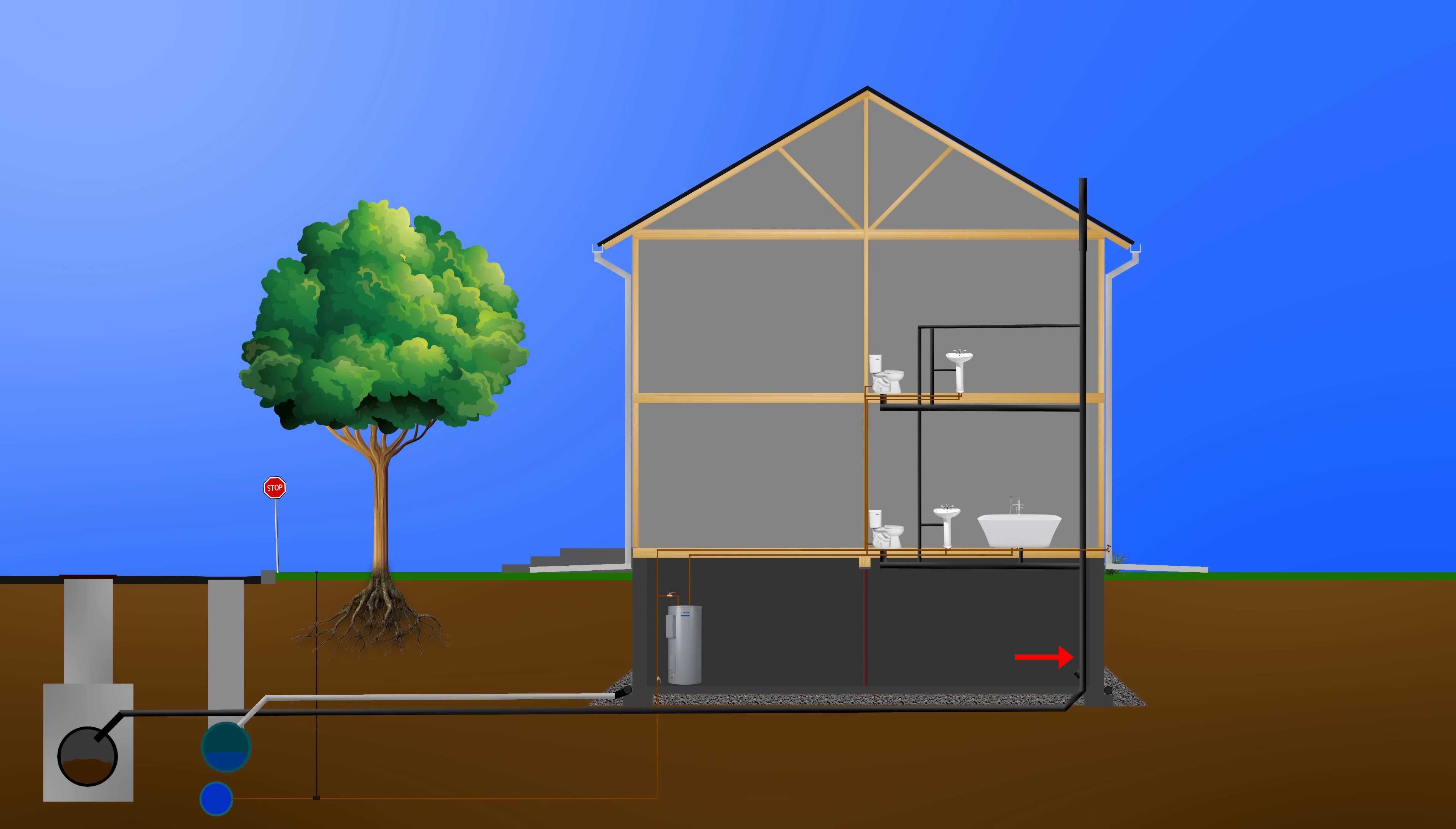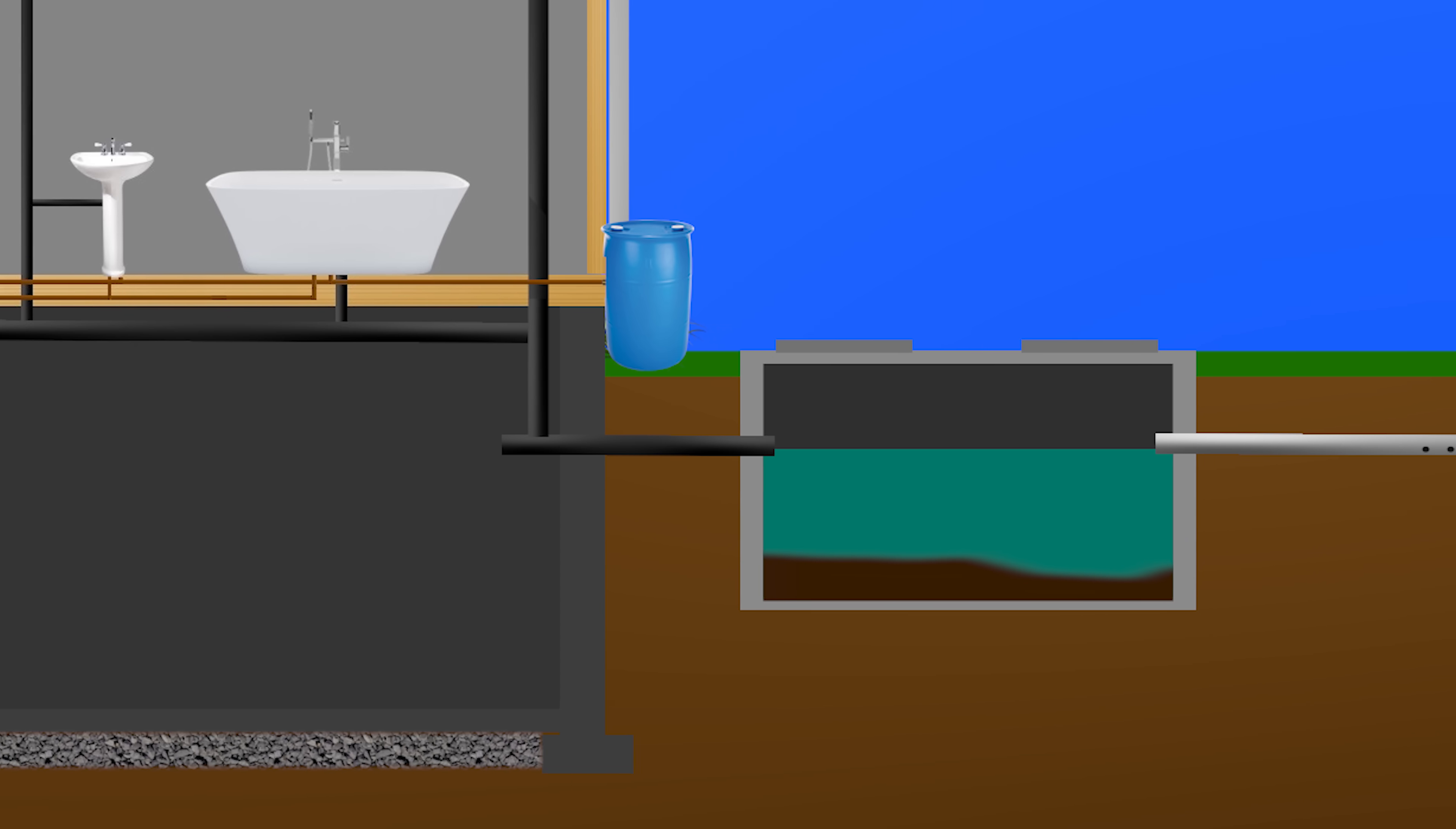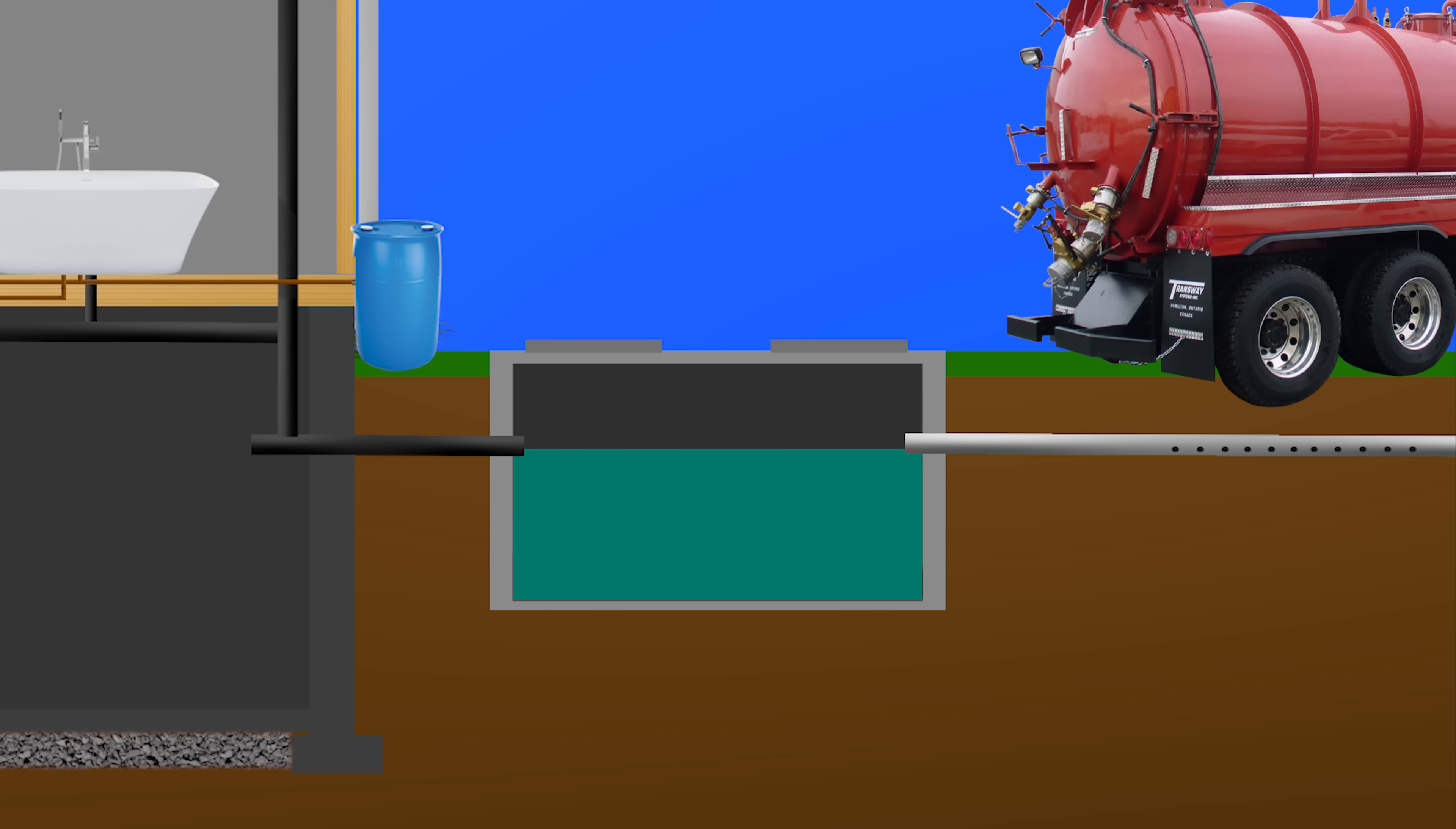But some homes don't have municipal services, so how do they get rid of their waste? Simple. The main drain pipe that would normally go to the sewers goes into what's called a septic tank. This septic tank, which is either concrete or polyethylene, separates the solids from the liquids and flows into a leach field or drain field, which then goes into the ground to get naturally filtered. The solids though eventually need to get pumped out by a vacuum truck to make sure it functions properly.